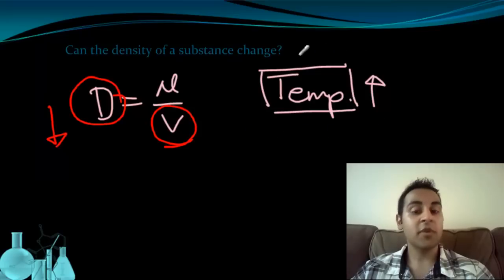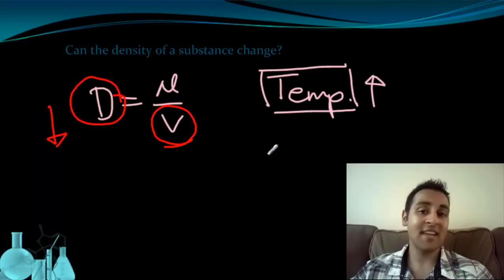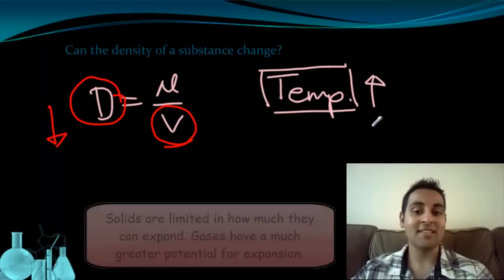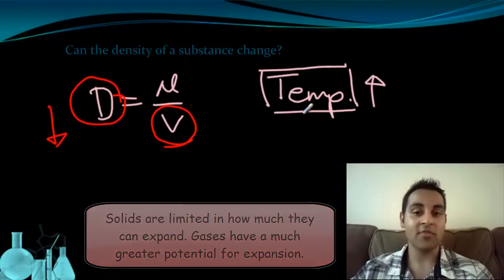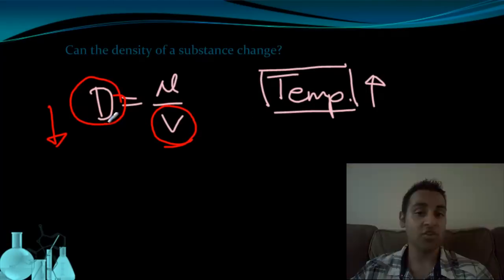And the degree to which temperature affects a substance actually depends a lot on what state it's in. Temperature has a much greater effect on the volume of gases than it does on the volume of solids. Solids can only expand so much, so they're the least affected by this phenomenon. But a liquid, and a gas particularly, will definitely be affected by an increase in temperature. And you'll see that the density can actually change.